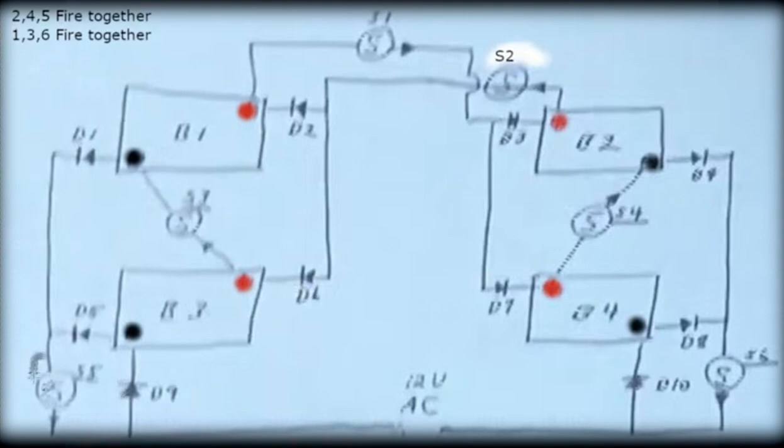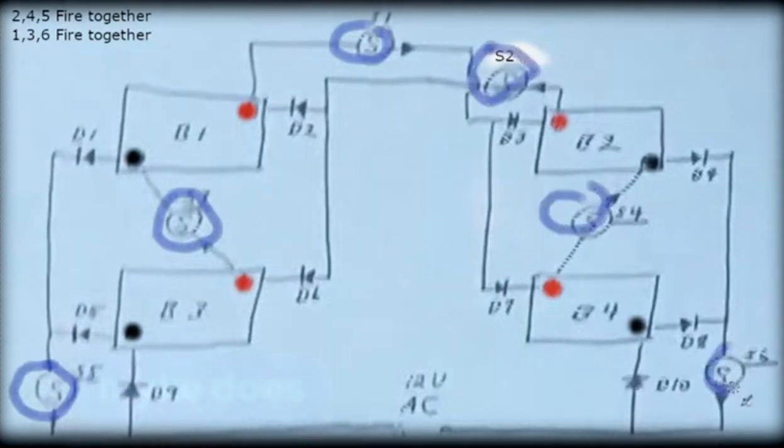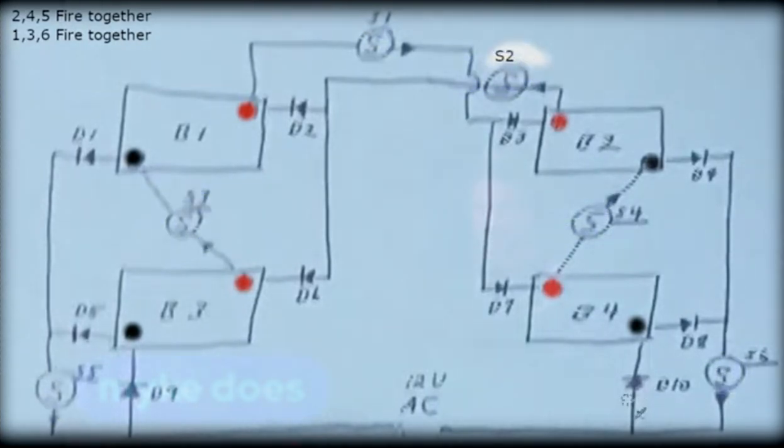S means switch, these are switches. Let me just go over the basic parts in here. Here's a switch, that's a switch, that's a switch. Everywhere it says S is a switch or a transistor, optocoupler. There's six switches, three get switched together and the other three get switched together. So two, four, and five fire together. One, three, and six fire together.